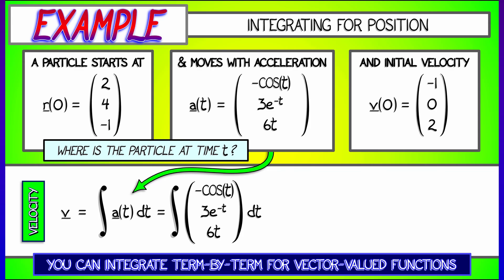Now, each of these is a simple integral. You know that the integral of minus cosine t is minus sine t. The integral of 3e to the minus t is negative 3e to the minus t, and the integral of 6t is 3t squared. But we have to remember the constants. The constants, multiple, not single: c1, c2, c3. We have three different constants of integration, one per component.